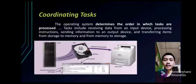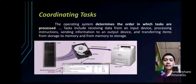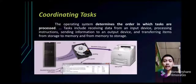Coordinating tasks: The operating system determines the order in which tasks are processed. This includes receiving data from an input device, processing instructions, sending information to an output device, and transferring items from storage to memory and from memory to storage. The operating system manages the processor across all these tasks.